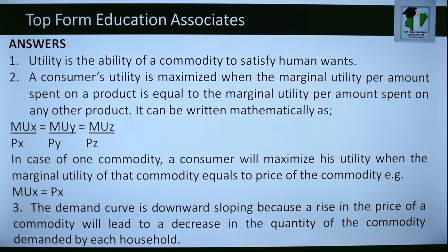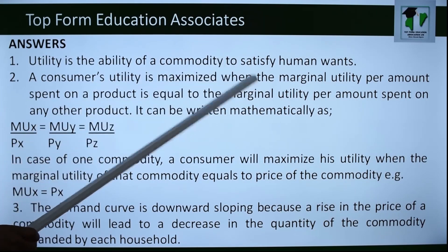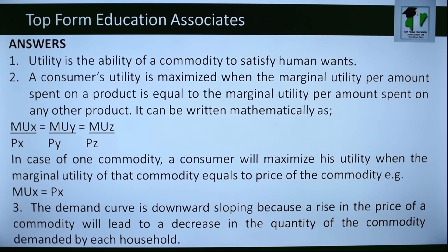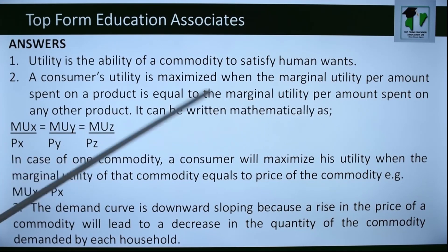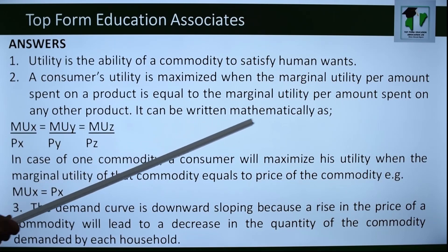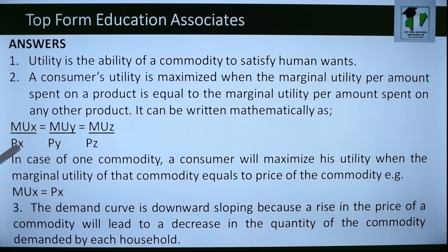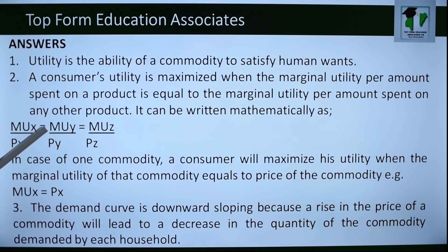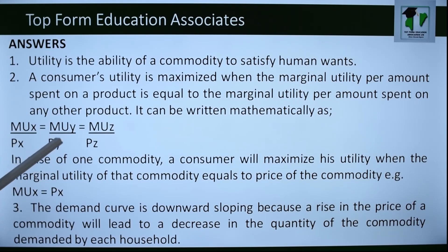Answers: (1) Utility is the ability of a commodity to satisfy human wants. (2) A consumer's utility is maximized when the marginal utility per amount spent on a product is equal to the marginal utility per amount spent on any other product, written mathematically as: MUx/Px = MUy/Py = MUz/Pz, where MUx, MUy, MUz are marginal utilities of products X, Y, Z, and Px, Py, Pz are their respective prices.